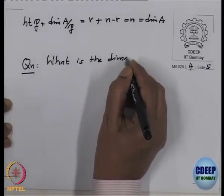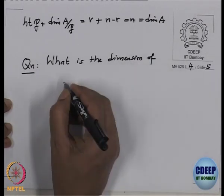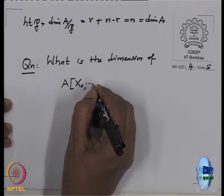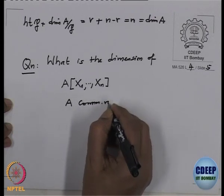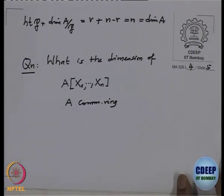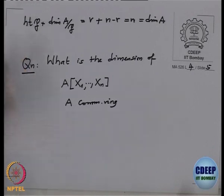I want to generalize this theorem to arbitrary commutative rings if possible. So now the base ring may not be a field. The question is: what is the dimension of a polynomial ring in n variables over an arbitrary commutative ring? I will do it for one variable first — the polynomial ring in one variable over a commutative ring.